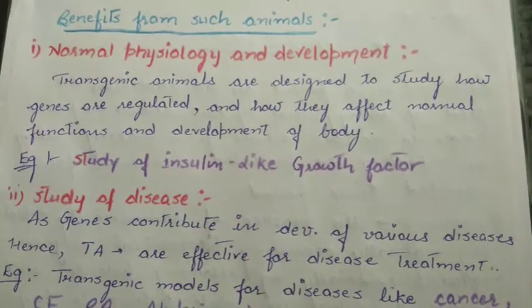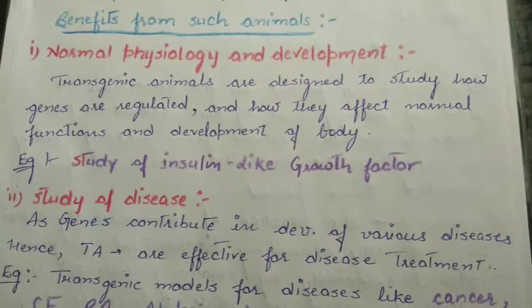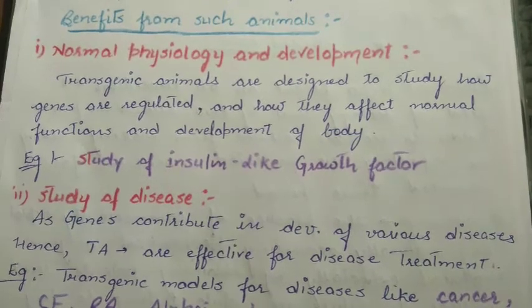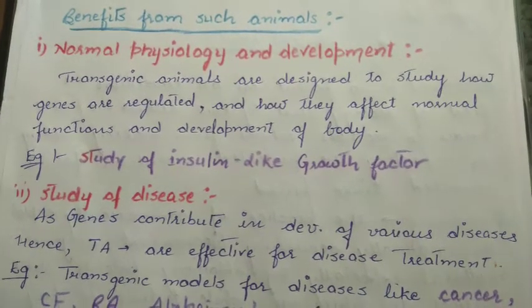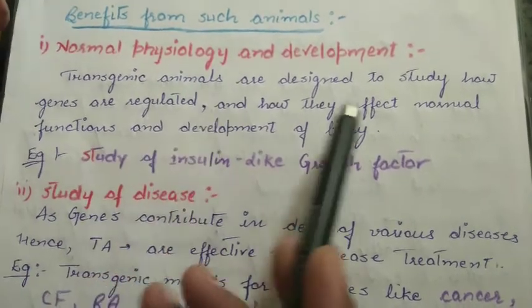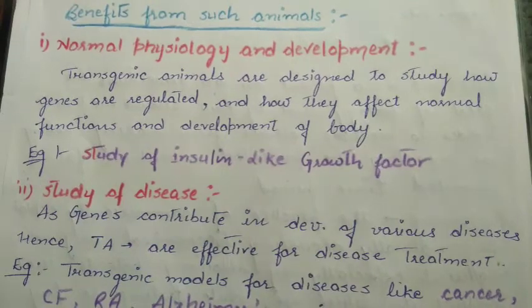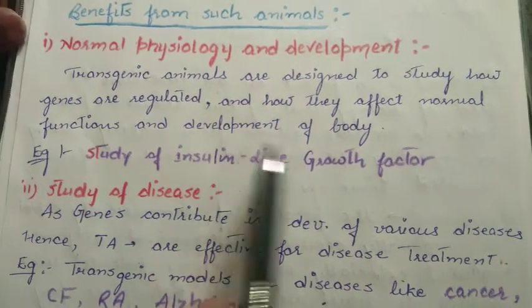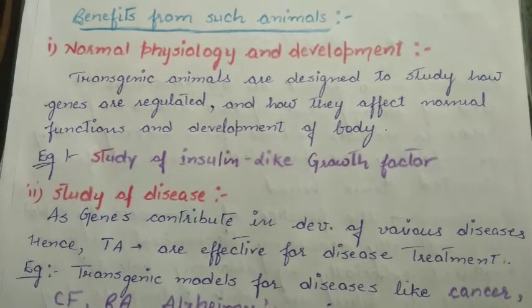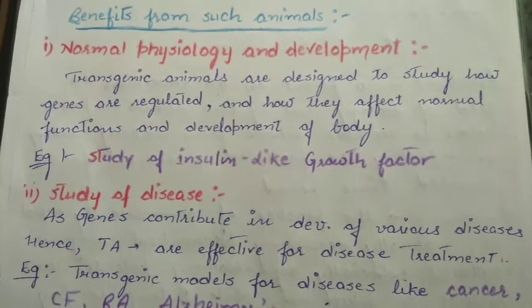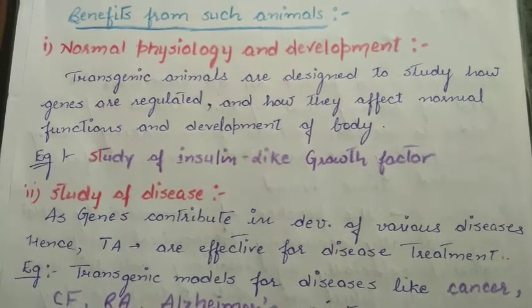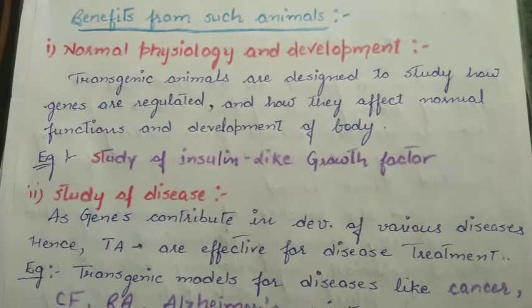The first benefit is the study of normal physiology and development. We know our genes very well. Each segment of DNA codes for a protein. For example, in a specific tissue, a particular protein or compound is being synthesized. When we design a transgenic animal, we can study the gene, the body, the function, and the development of that gene, and what effect a change in the gene produces.